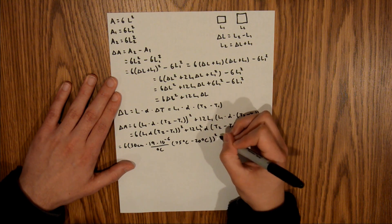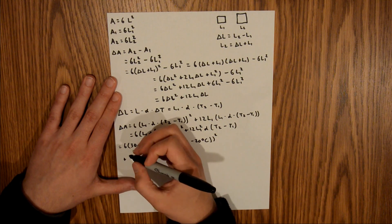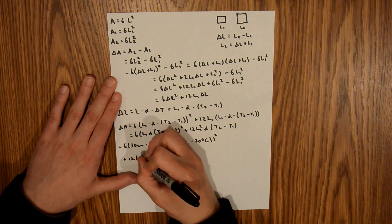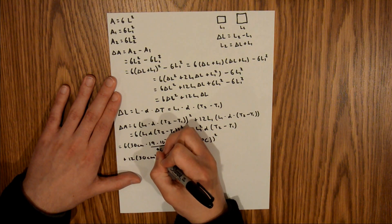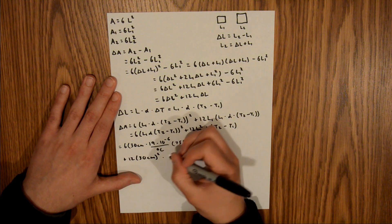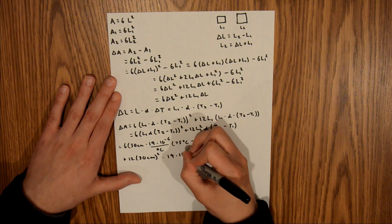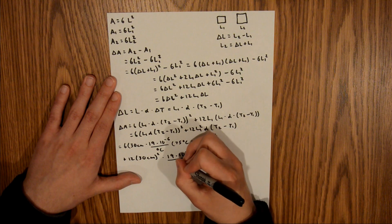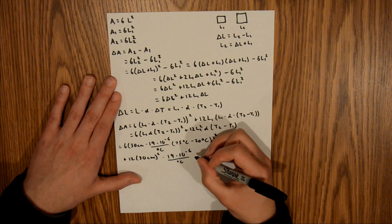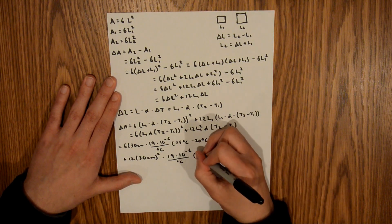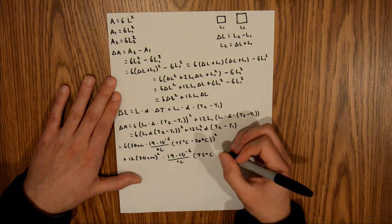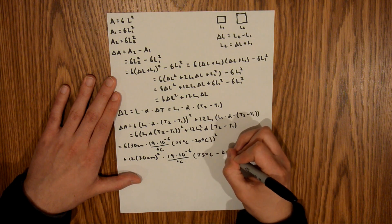and that's going to be plus 12 times 30 centimeters squared times that alpha again, 19 times 10 to the negative 6 per degree C, and then times our temperature difference again, 75 degrees C minus 20 degrees C.